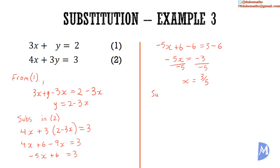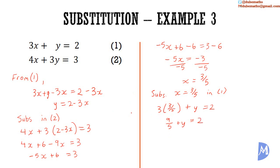Now we substitute x equals 3 over 5 in any one of the equations. Substituting in equation 1, we get 3 multiplied by 3 over 5 plus y is equal to 2. 3 multiplied by 3 over 5 is equal to 9 over 5. Subtracting 9 over 5 from both sides, 9 over 5 minus 9 over 5 is equal to 0, so y is equal to 2 minus 9 over 5, which equals 1 fifth.